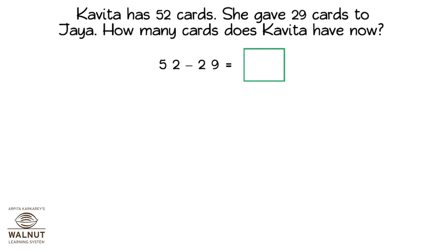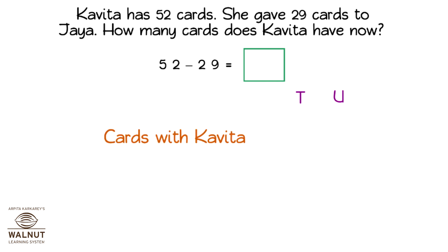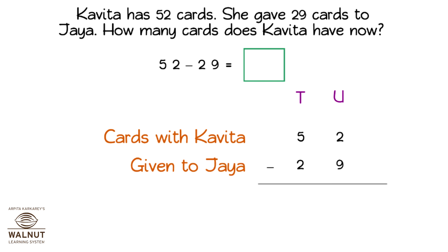So, we write it like this. Then we have to find the answer. How do we do it? First, we write the problem properly in tens and units form. Now, we subtract the numbers in the units place. Can you do it? No? So, we have to borrow.